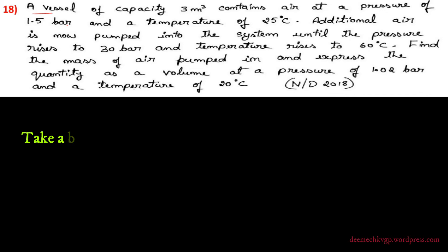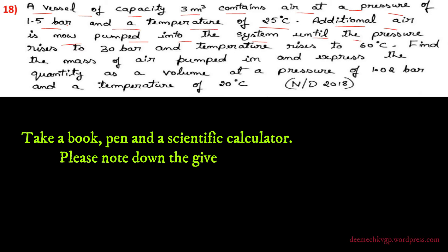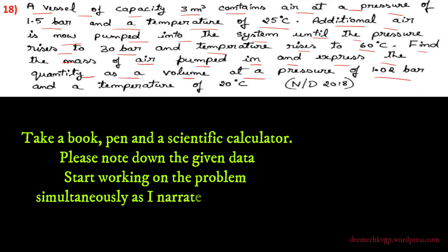Let me solve this problem. A vessel of capacity 3 cubic meters contains air at a pressure of 1.5 bar and a temperature of 25 degrees centigrade. Additional air is now pumped into the system until the pressure rises to 30 bar and temperature rises to 60 degrees centigrade. Find the mass of air pumped in and express the quantity as volume at a pressure of 1.02 bar and a temperature of 20 degrees centigrade.